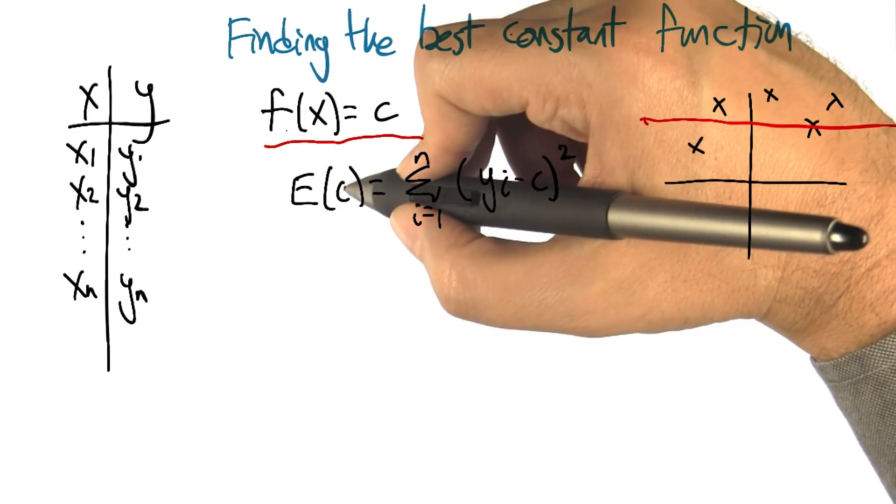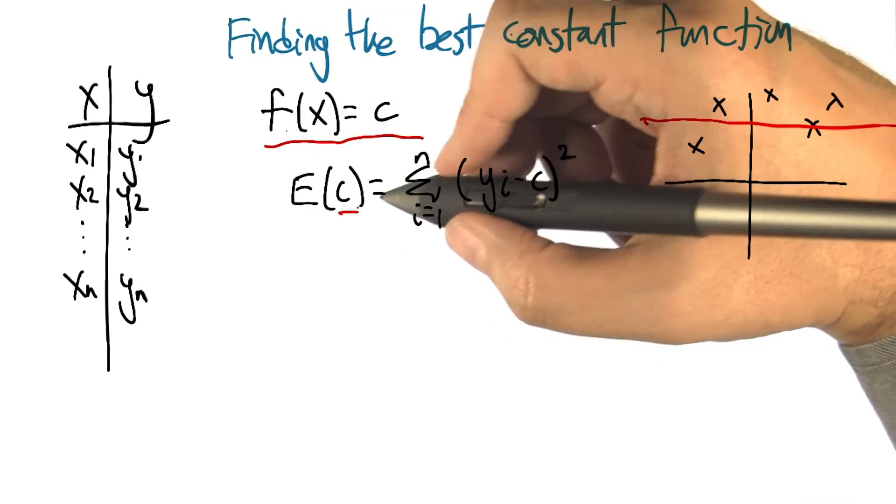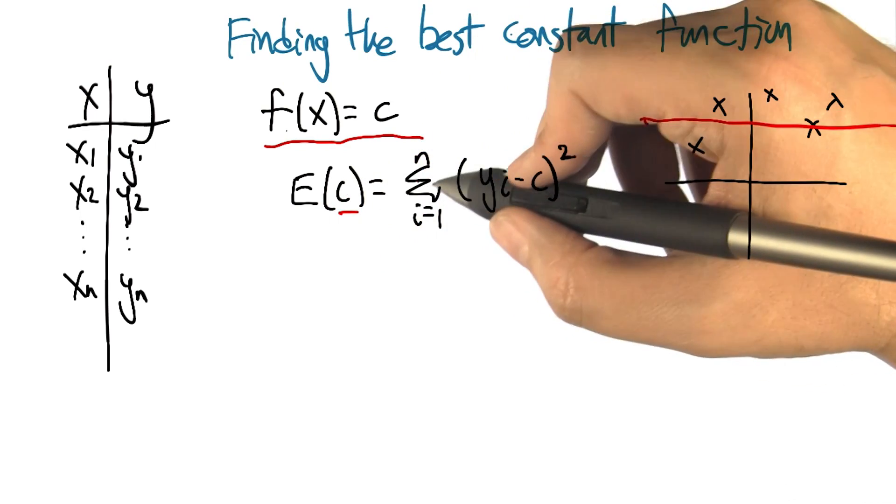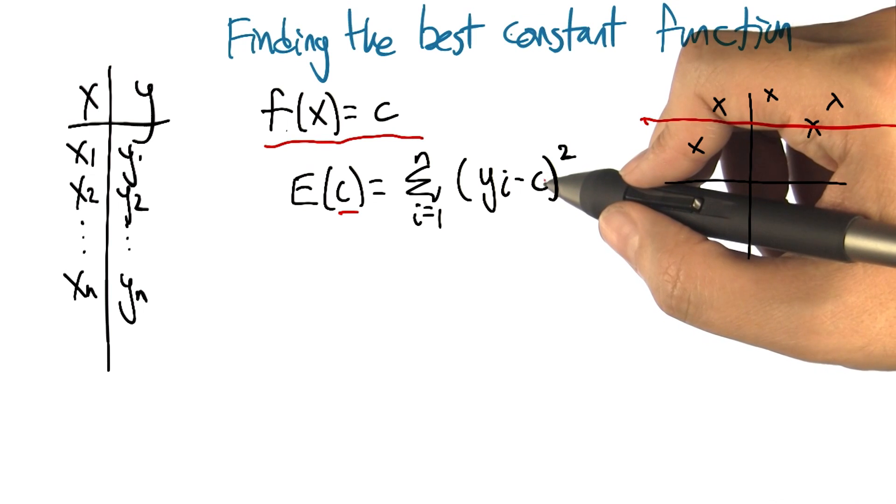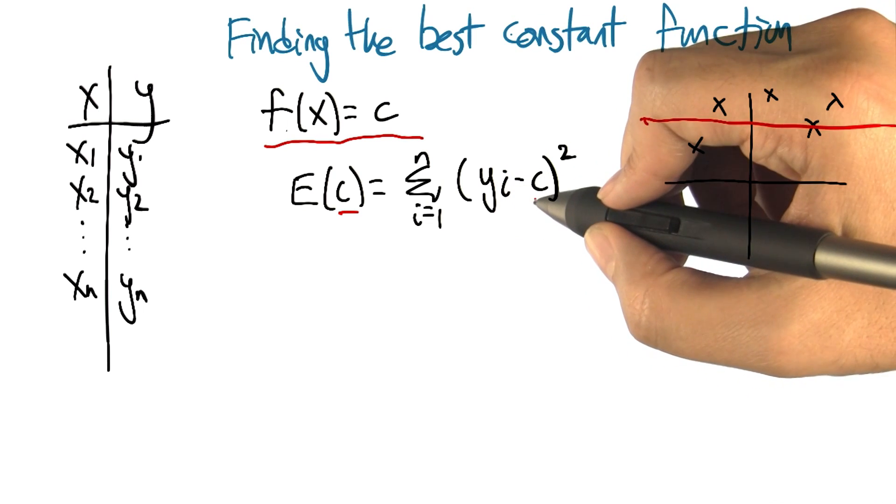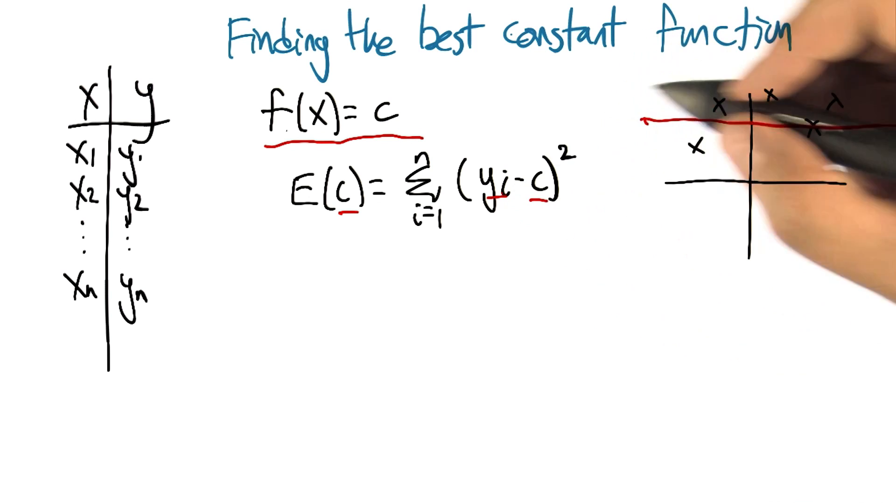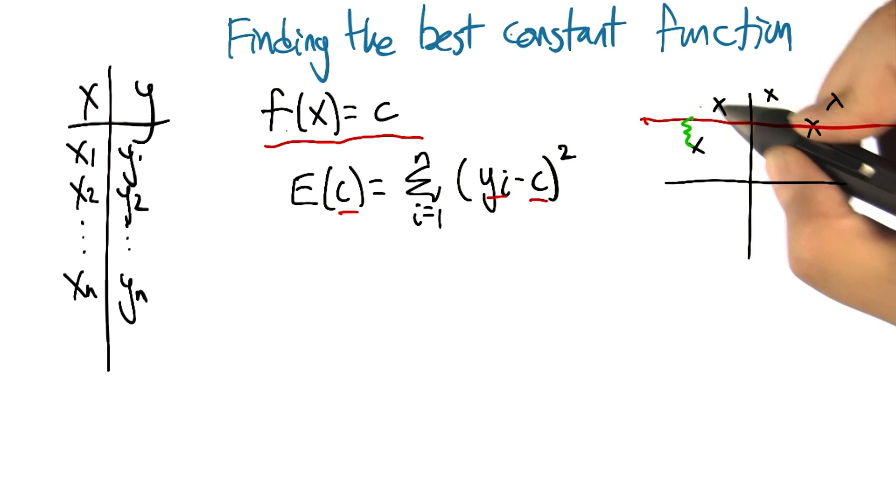Then what we're going to do is we're going to say for any given value of c, any given constant, we can have an error. What's the error going to be? The error is going to be the sum over all the data points of the squared difference between that constant that we chose and what the actual yi value is. So that's really these differences here.